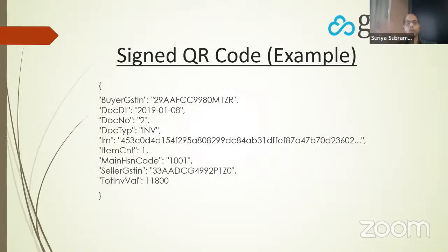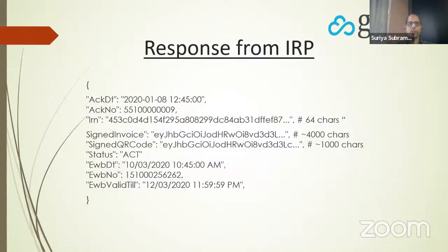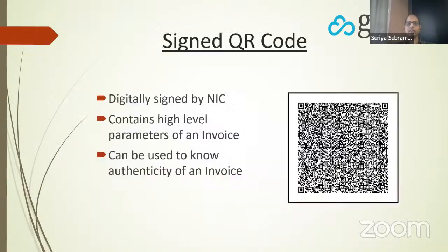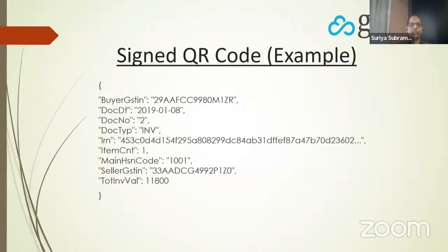The QR code encodes information. Those characters like EYJHB and GC don't make sense to an ordinary user, but if you decode them you get the buyer GST number, document date, document number, and all the other details.